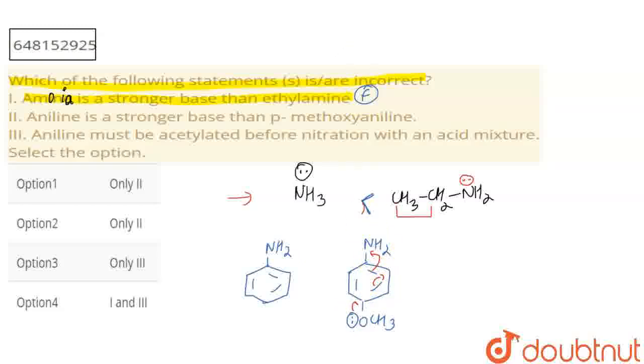Through conjugation, the electron density on nitrogen will increase. The OCH3 group increases electron density in the ring through conjugation, making para-methoxy aniline a stronger base. So this statement is also false.